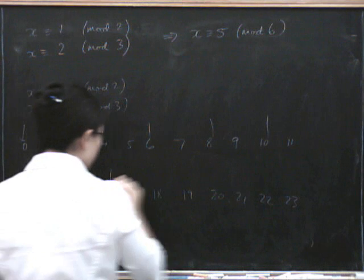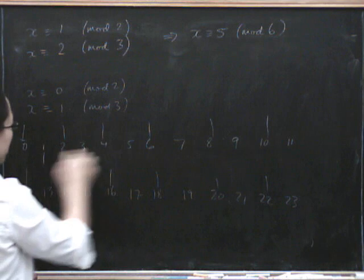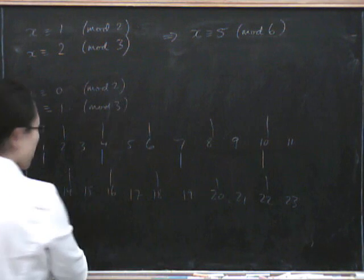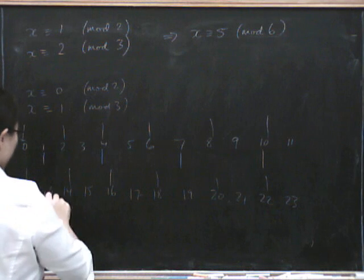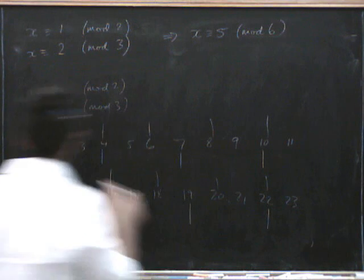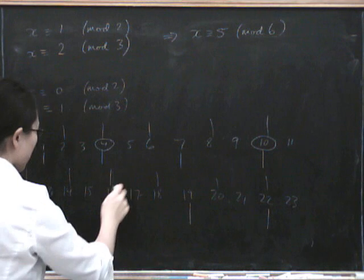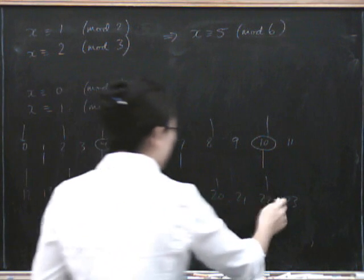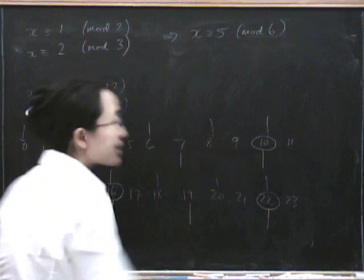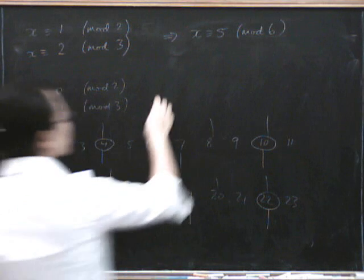And I want to be 1 mod 3. So the solutions are here, here, here, here, and so on. Again, they occur once every 6, and it's going to be that they're all congruent to 4 mod 6 this time.